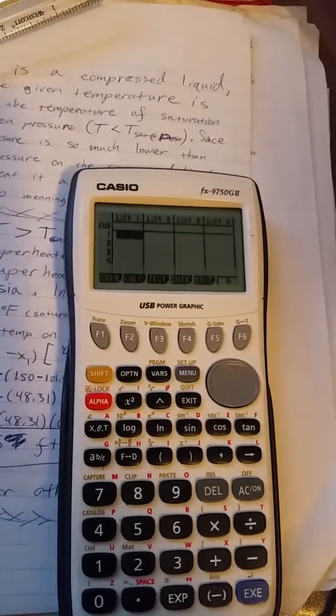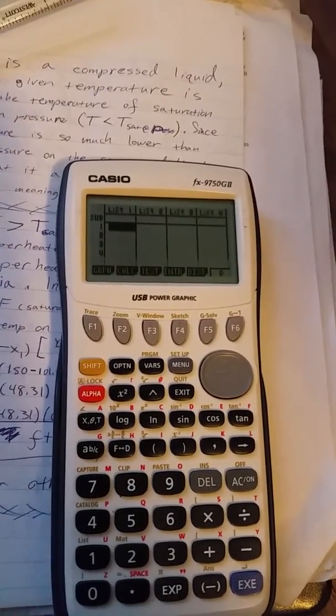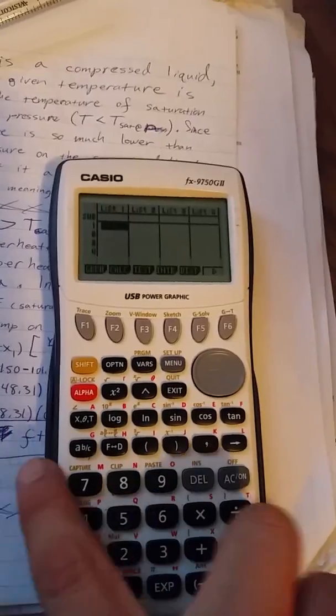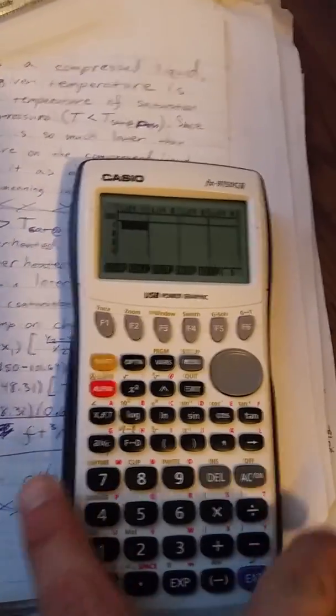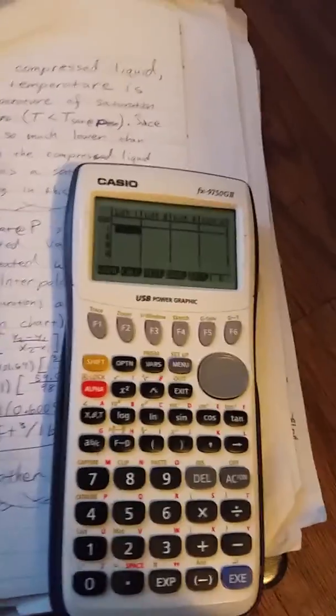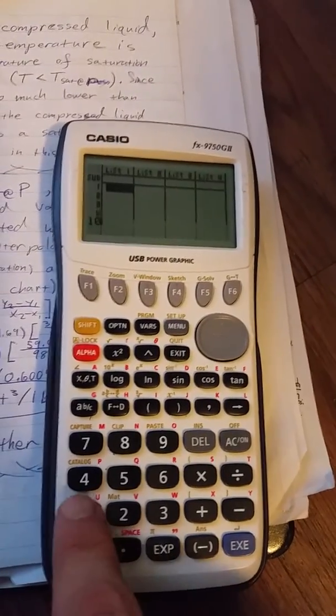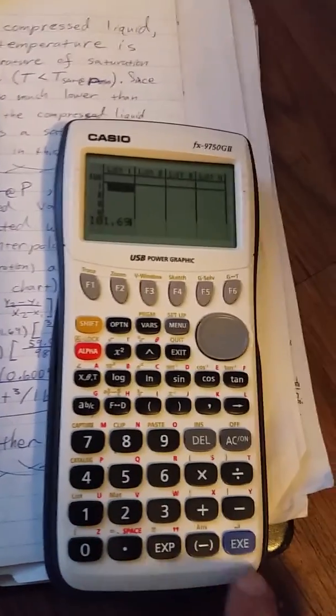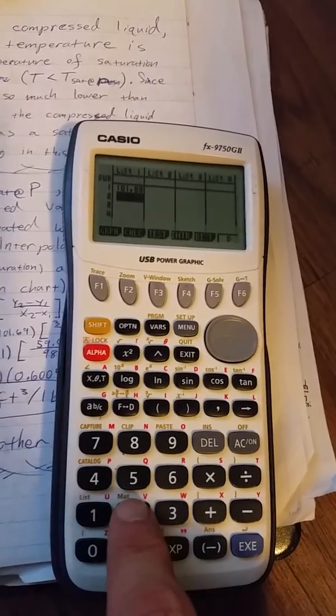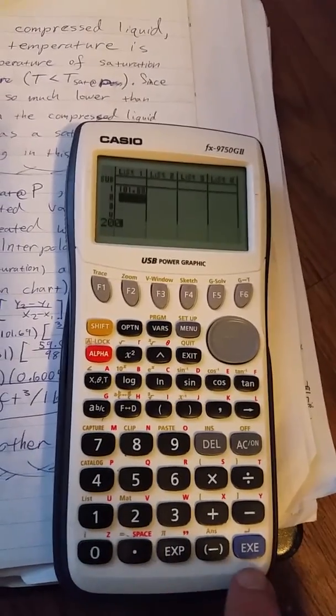So we know that the temperature from the chart swings from 101.69 to 200 degrees Fahrenheit. So that's what we're going to do. We're going to punch in 101.69 for our first value, and then 200 for our last value.